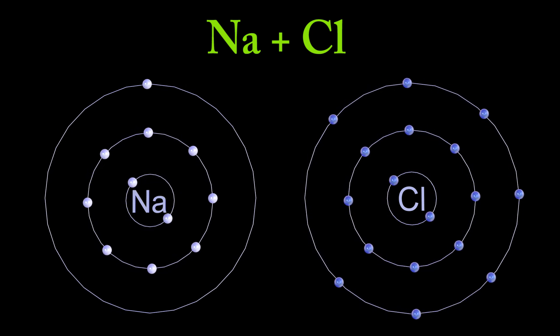This same thought process can be done with chlorine. So chlorine has seven electrons in its outermost shell, and it is much easier for chlorine to just simply steal one electron than to try and donate all seven.